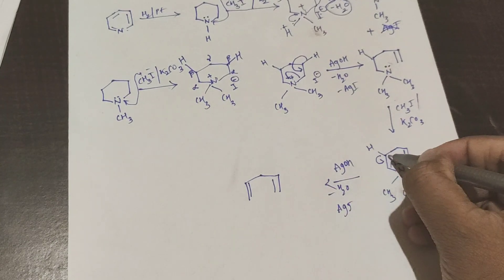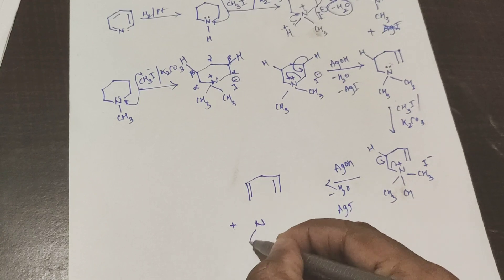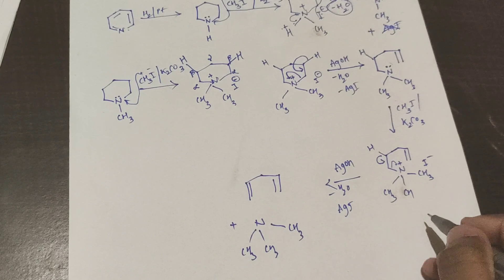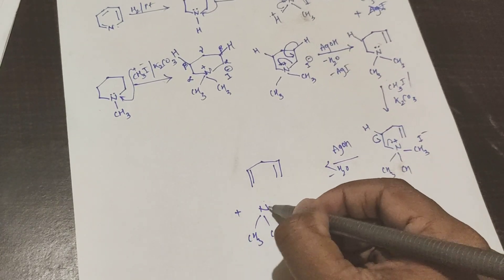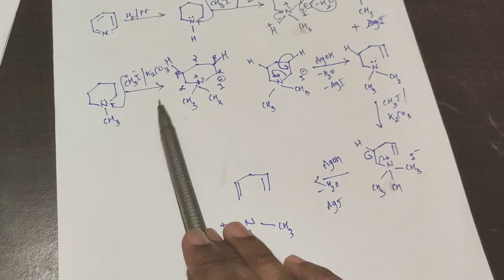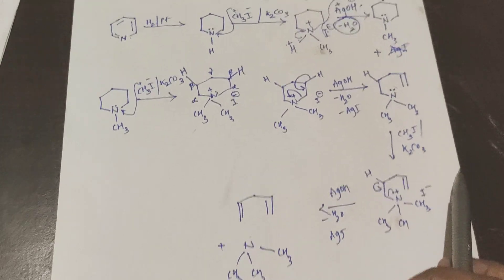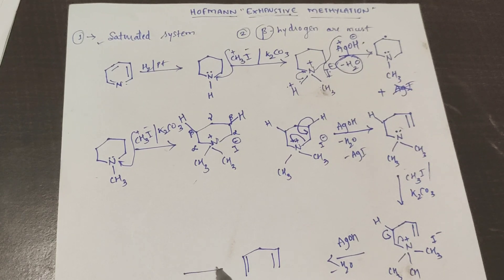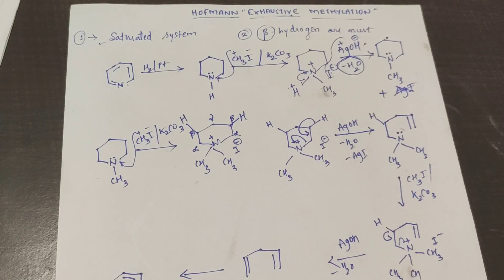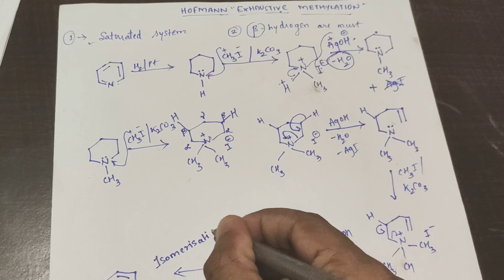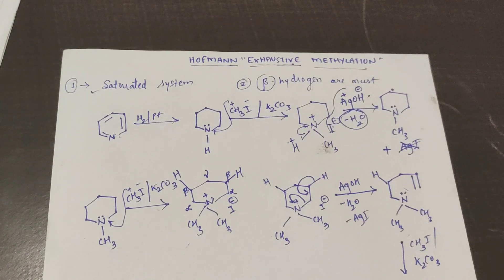Now again this CH3 goes and attaches — totally three CH3 groups are now on the nitrogen, giving I minus. The beta hydrogen is here. This beta hydrogen comes here, the bond comes here, water is removed, H2O is removed, AgI is removed. What we get is this structure: N(CH3)3 along with AgI and H2O. After three methylation steps, we have got the nitrogen out of the ring. Later isomerization takes place and you get the alpha-beta unsaturated form — that is the final product after Hofmann Exhaustive Methylation.